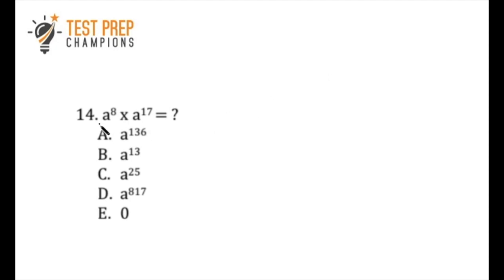So we're trying to multiply two terms here, and they both have the same base. The base is A. When we have the same base, there's an exponent rule where we just add the exponents up. What is 8 plus 17? 8 plus 17 is 25, so C is the right answer.